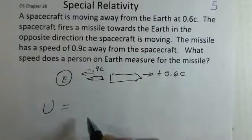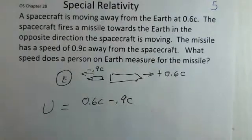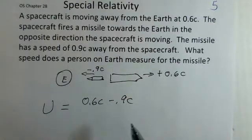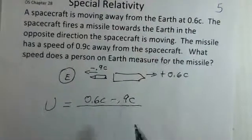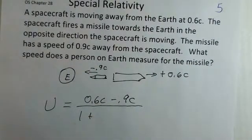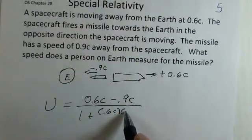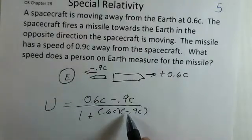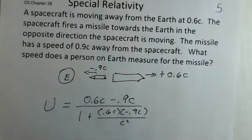In classical physics, we would do this as 0.6c minus 0.9c, and we'd be done. We'd have minus 0.3c for the measurement, but that's not the way special relativity adds velocity. Special relativity has a correction factor in the denominator. It's always one plus, and then you multiply the two velocities together. And it is important that you keep the minus sign with the velocity that's negative, and then we divide by c squared.